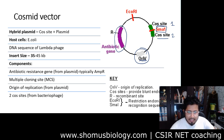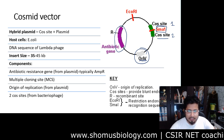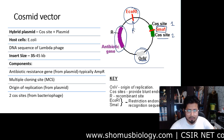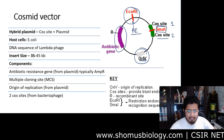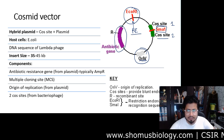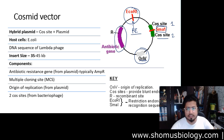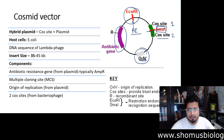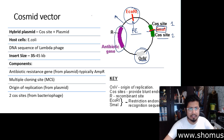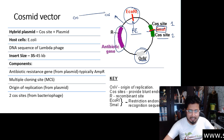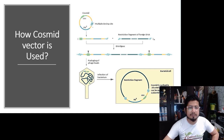Apart from the antibiotic resistance gene, there are other restriction endonuclease sites such as EcoRI and SmaI. These are restriction recognition sequences — restriction enzymes recognize specific sequences and can cleave them. For example, SmaI can be used to cleave right between the two cos sites, causing the circular DNA to become a linear DNA with cos sites at both ends.